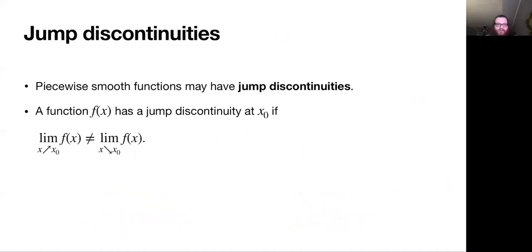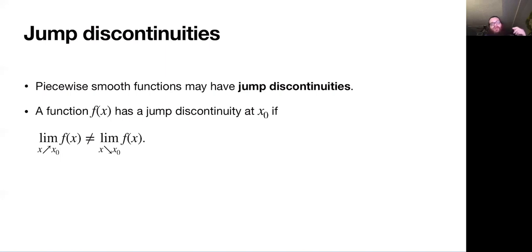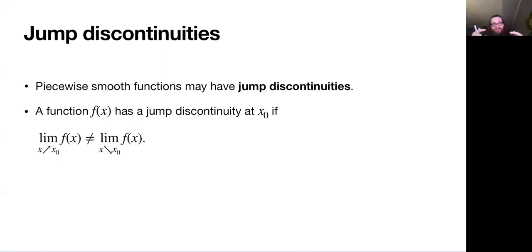The other piece intrinsic to the kinds of functions we're interested in is going to be jump discontinuities. What is a jump discontinuity? If you have a function, we say it has a jump discontinuity at a point, say x naught, if when you take the left and right limits, those limits disagree. Each of those limits are going to be finite — they're going to be well-defined limits — but the limits won't agree.